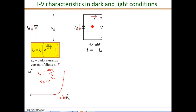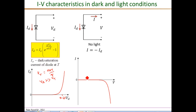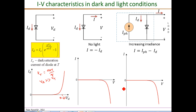In PV applications we are interested in the external current I. Under the no-light condition, the external current I is simply the negative of the diode current, so I = −I_D. The IV characteristic at no-light condition is the negative of the diode current plot — this is the dark IV characteristic. As we begin to illuminate the PV cell with sunlight, the I_photon current source component is added, so the external current I is now I_photon minus the original diode current I_D.